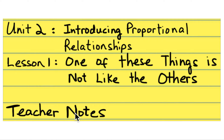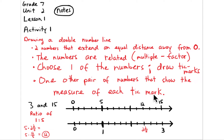These are teacher notes for seventh grade Unit 2, introducing proportional relationships, Lesson 1: 'One of These Things is Not Like the Others.' The first activity asks you to draw double number lines, so I'm going to go through how you do that briefly.